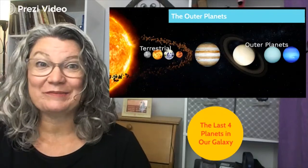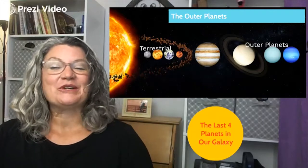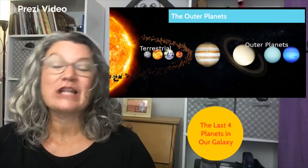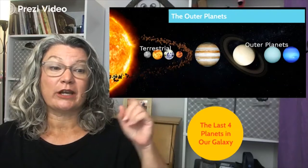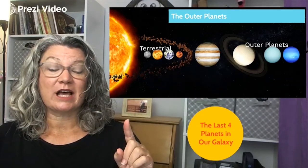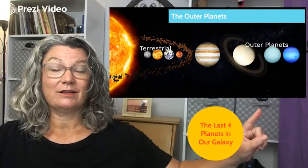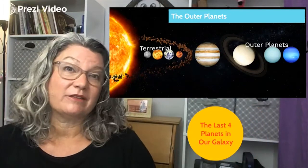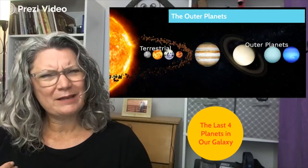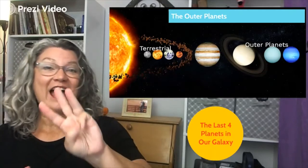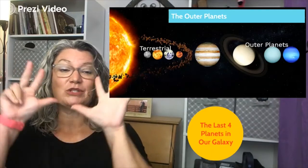Welcome back to the Outer Planets for 5th grade, Lesson 2. Last class, we focused on learning the names of the planets in order. We started closest to the sun and moved out away from the sun. We learned a mnemonic device to help us remember them. Do you remember it? My very educated mother just served us nachos.